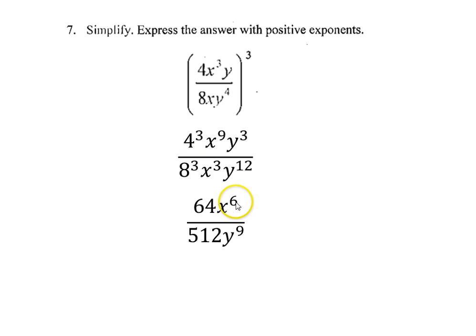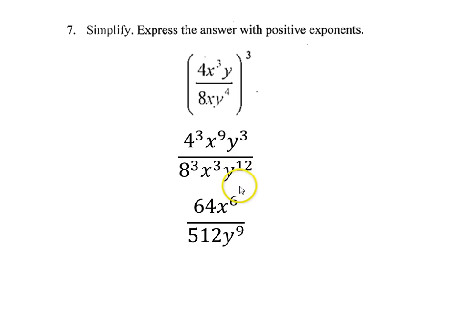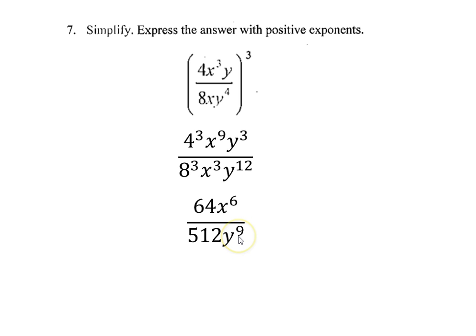I can now simplify a little bit because I have exponents I can evaluate. I have the same base in the numerator and denominator, so I can use the quotient to powers property. 64 comes from 4 to the third. This x to the sixth comes from x to the ninth over x to the third. It's kind of like these three x's cancel out 3 in the numerator, leaving us with x to the sixth in the numerator. 9 minus 3 is 6. And I put the x to the sixth in the numerator because there are more x's in the numerator than the denominator.